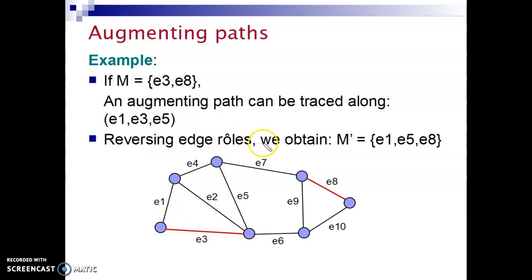Now if you reverse the edge roles here, we will obtain E1 belonging to M prime. E3 does not belong to M prime, and E5 belongs to M prime. By reversing the roles of E1, E3, E5, we create a new matching M prime of cardinality 3.